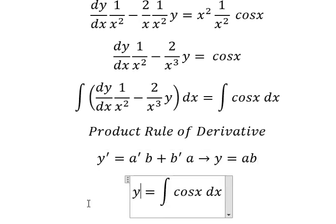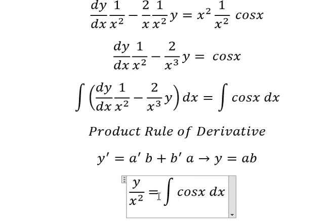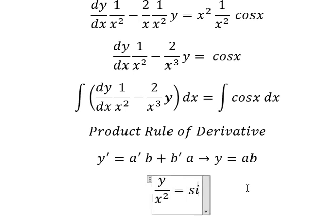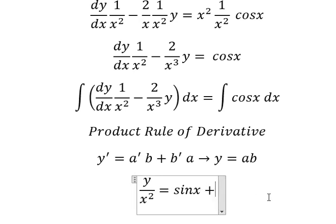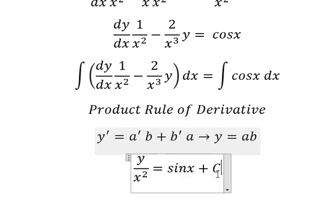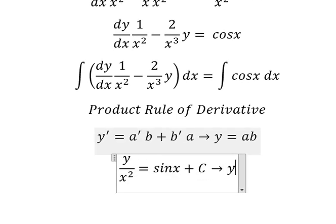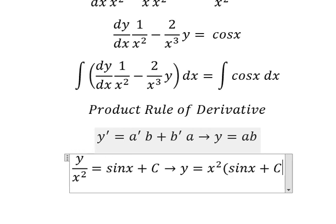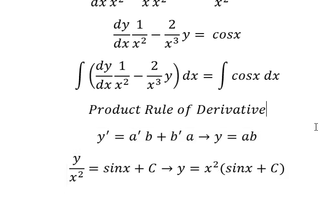The integration of that one, we have y over x squared equals sine x, and I will put c. Next we multiply both sides by x squared. That is the end, thank you for watching.